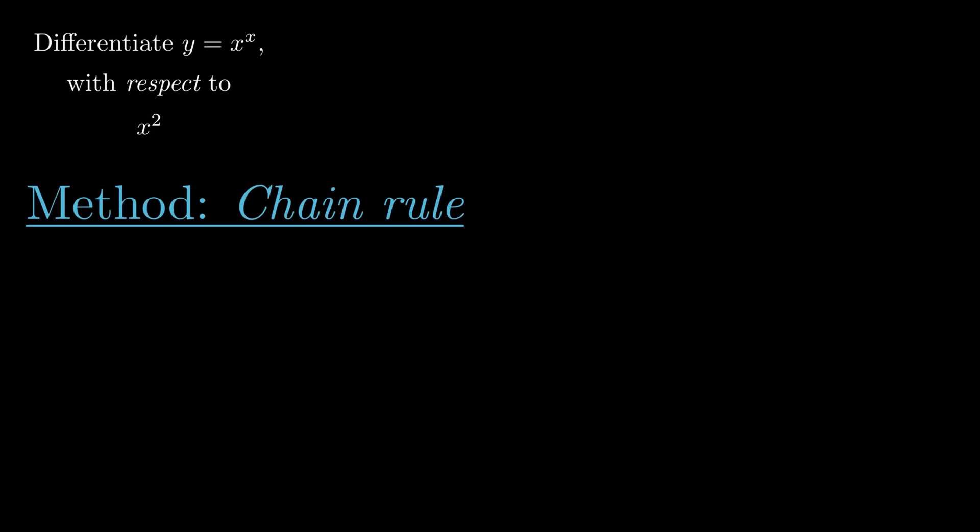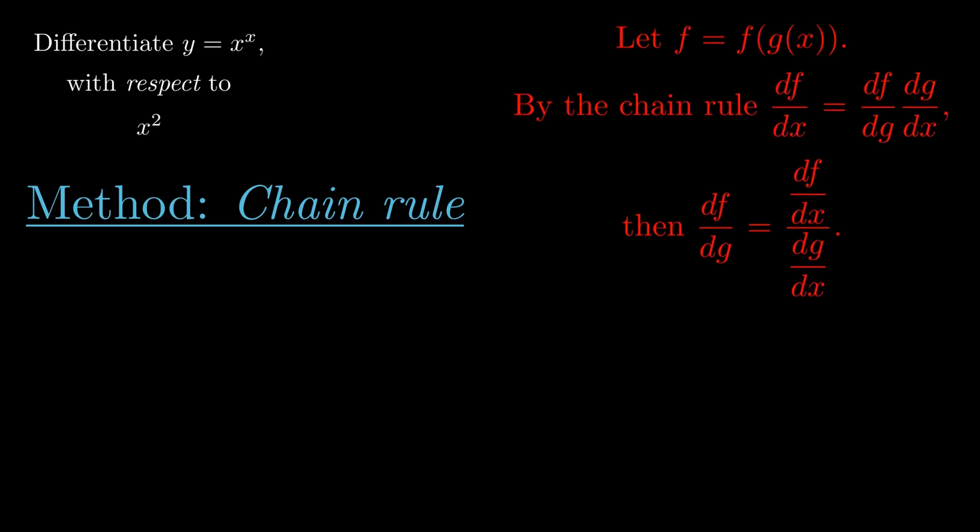We're going to begin by letting f be equal to f of g of x. If we differentiate f with respect to x, we get df/dx is equal to the derivative of f with respect to g, multiplied by the derivative of g with respect to x. And if we divide both sides by the derivative of g with respect to x, we get the following formula.